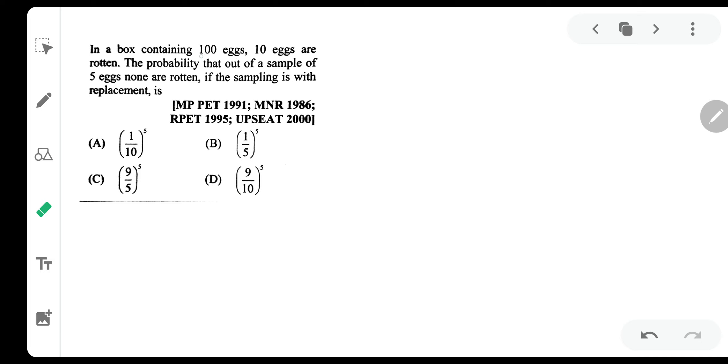Now this question says that there are 100 eggs and out of which 10 eggs are rotten. Let P be the probability that the egg selected is rotten.